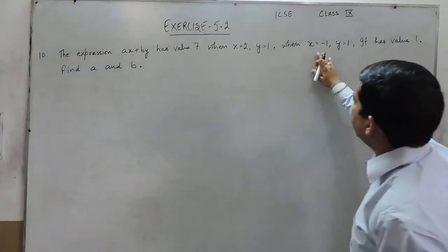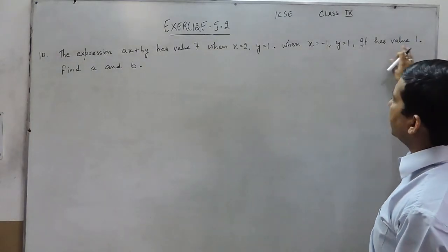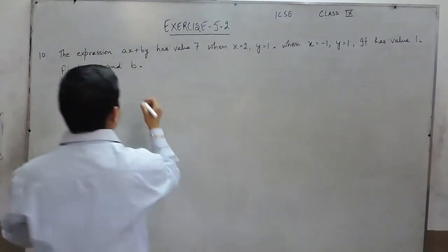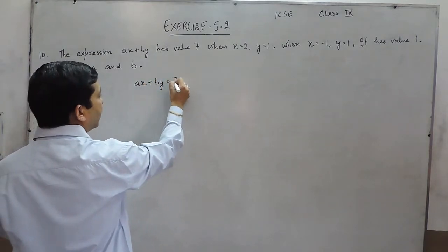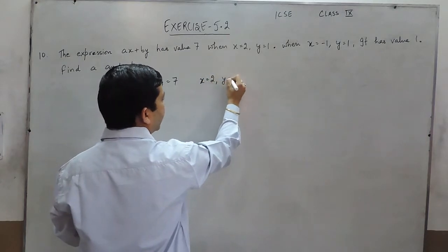If the value changes from 2, 1 to x as minus 1 and y as 1, then the value of that expression will come out to be 1. So we are saying that ax plus by is equal to 7 in the case when x is equal to 2 and y is equal to 1.